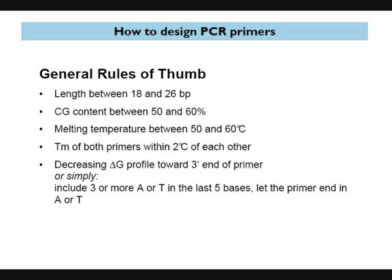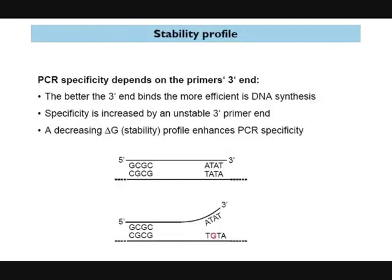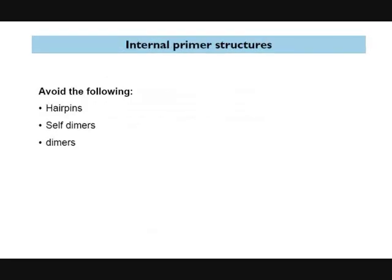General conditions for primer designing: the length should vary between 18 to 27 base pairs, GC content between 50 to 60%, and the melting temperature between 50 to 60 degrees Celsius. The temperature difference between the forward and reverse primer should not be more than 2 degrees Celsius, and a high-quality primer ends in an A or a G. Conditions to be avoided include hairpins, dimers, and self-dimers.